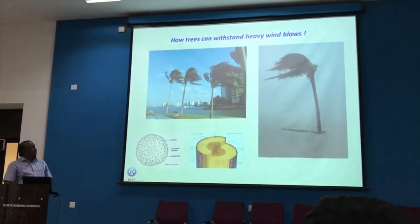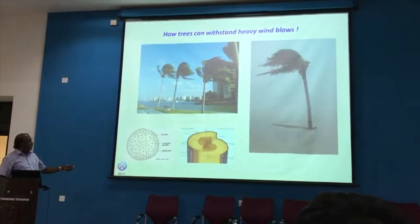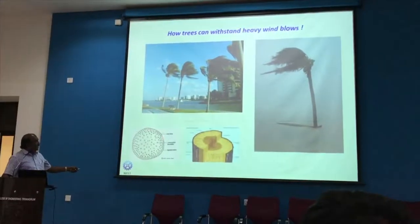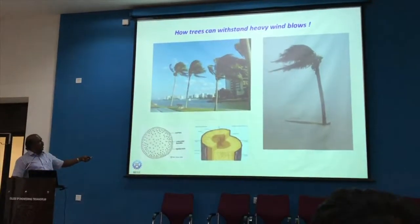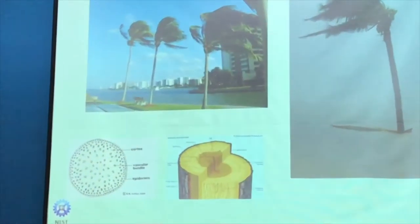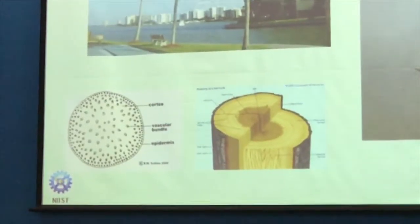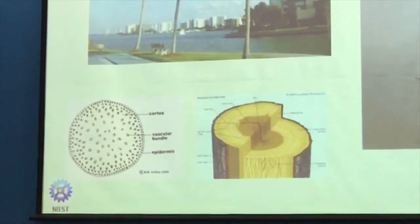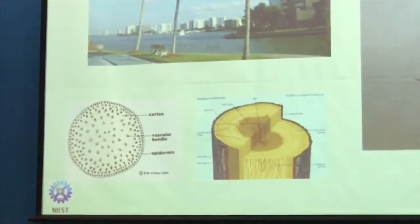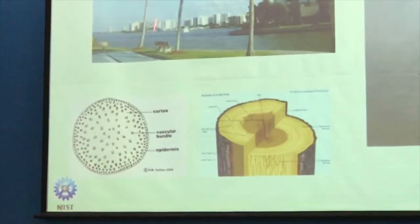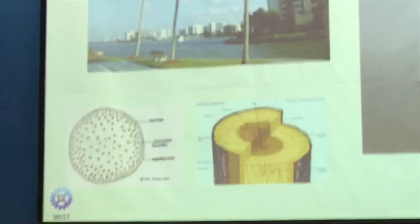The heavy wind blows are there, so nature itself has made the tree so soft. It has been made by composite materials, and if you see, it may be a coconut tree or amaranth tree or any type of tree — a lot of fibers will be there, and these fibers give the total strength to the tree.